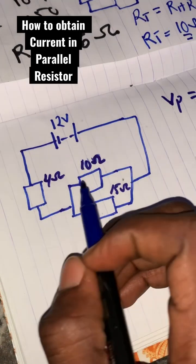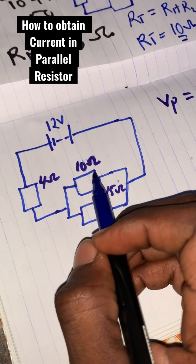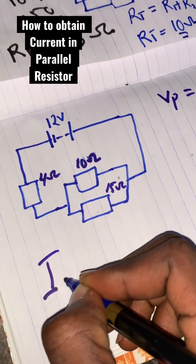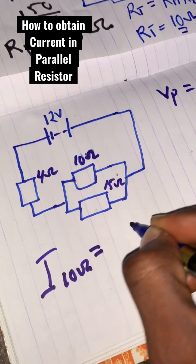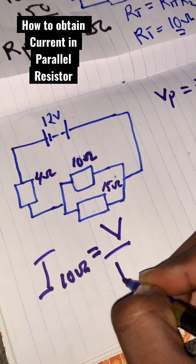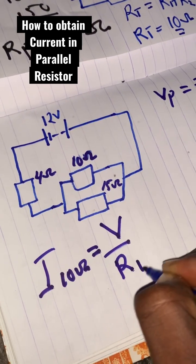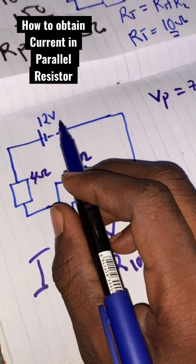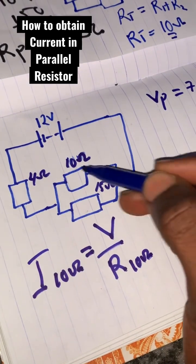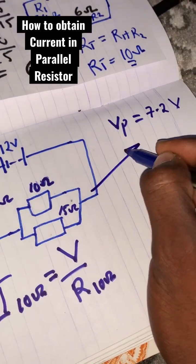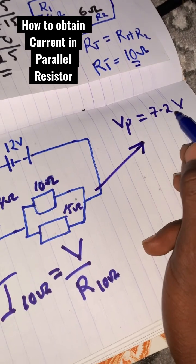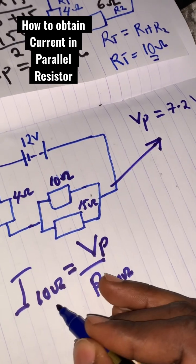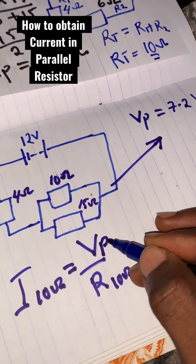To find the current through the 10-ohm resistor, we use the formula: I (10 ohm) equals V divided by R (10 ohm). However, we are not going to use the total voltage — we are going to use the voltage across the parallel resistor, which we obtained as 7.2V. This will be V_phi.